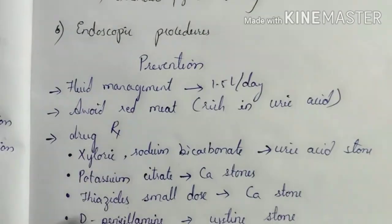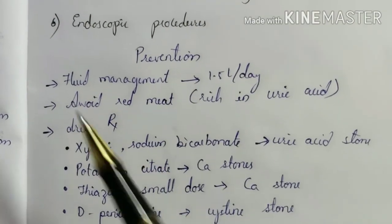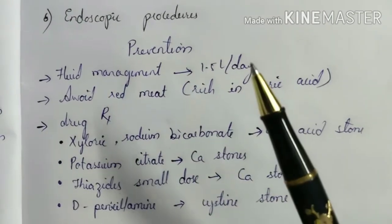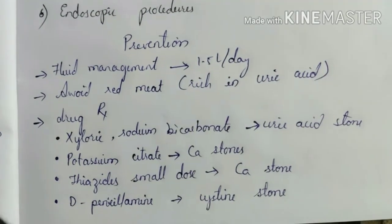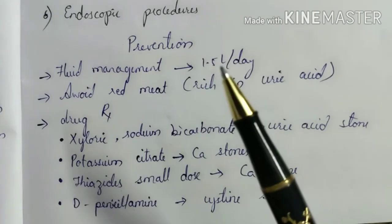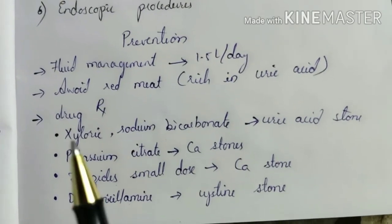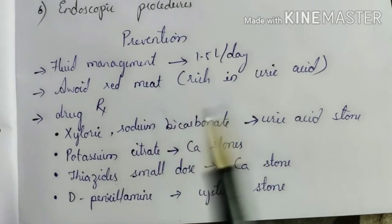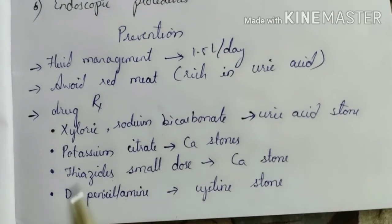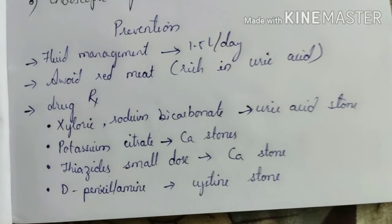Prevention from stone disease includes fluid management — about 1.5 liters of water per day. Avoid red meat as it is rich in uric acid and will result in uric acid stone formation. Certain drugs are given: allopurinol and sodium bicarbonate for uric acid stones, potassium citrate for calcium stones, thiazide in small doses for calcium stones, and D-penicillamine for cystine stones.